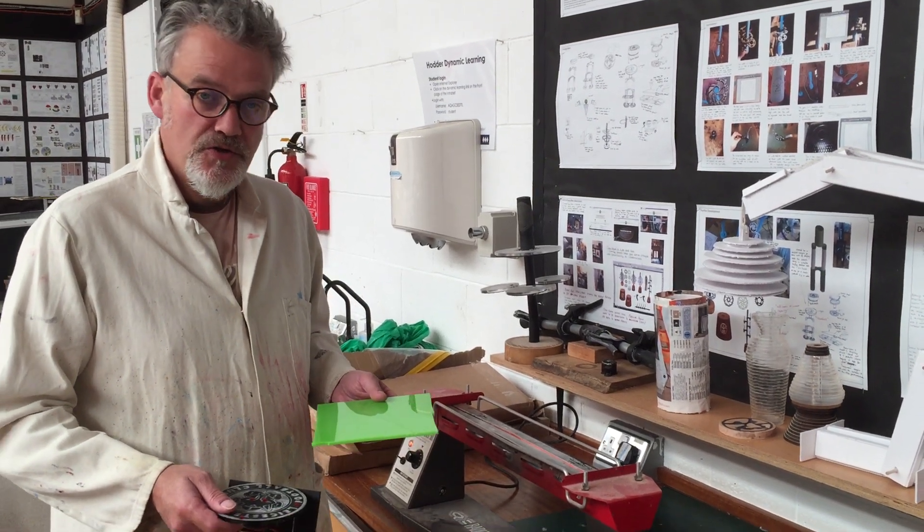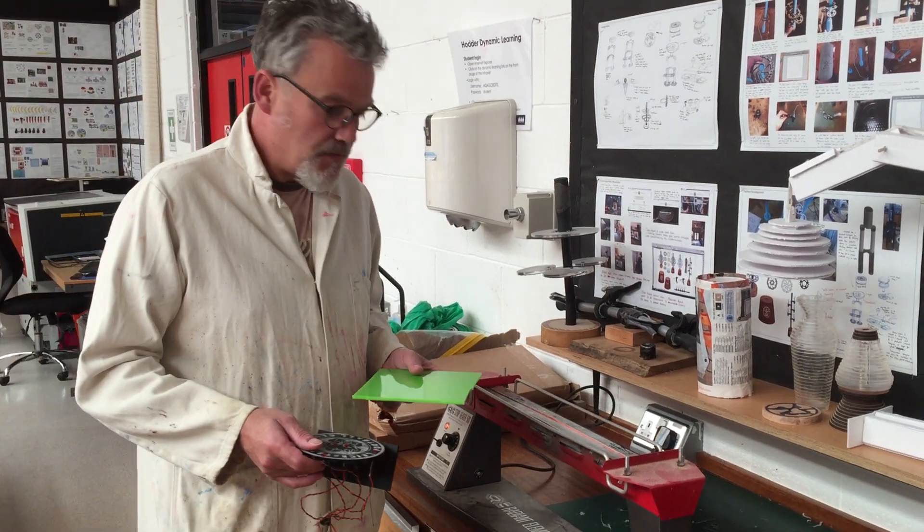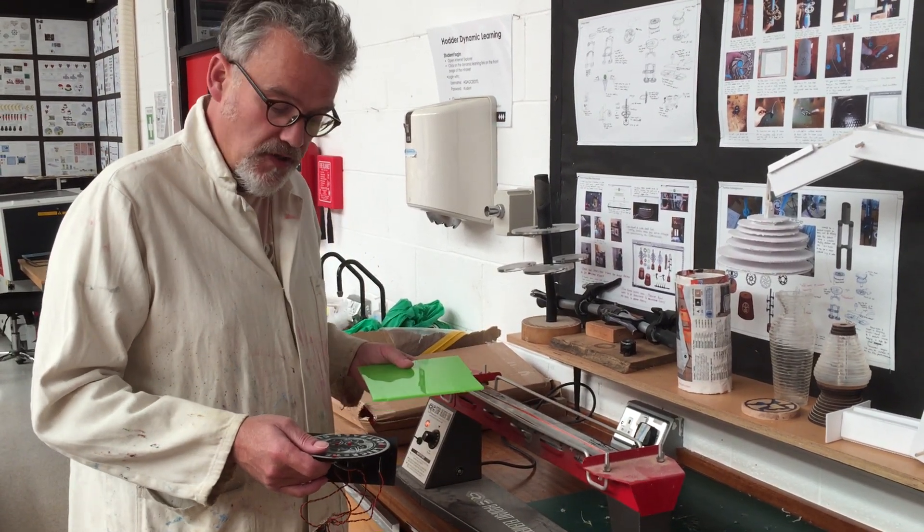Okay, so this is a brief introduction to the process. We use a strip heater, sometimes called a line bender, because it will bend plastic along a certain line.